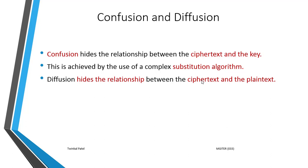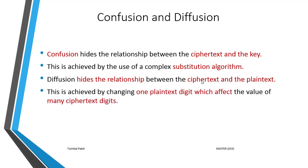The next technique is diffusion. Diffusion is a technique used to hide the relationship between the ciphertext and the plaintext. It means that each output bit should depend on the input bits in a very complex way. In a cipher with good diffusion, if one bit of the plaintext is changed, the ciphertext should change completely. This is achieved by a complex algorithm. A good cipher contains both diffusion and confusion techniques.